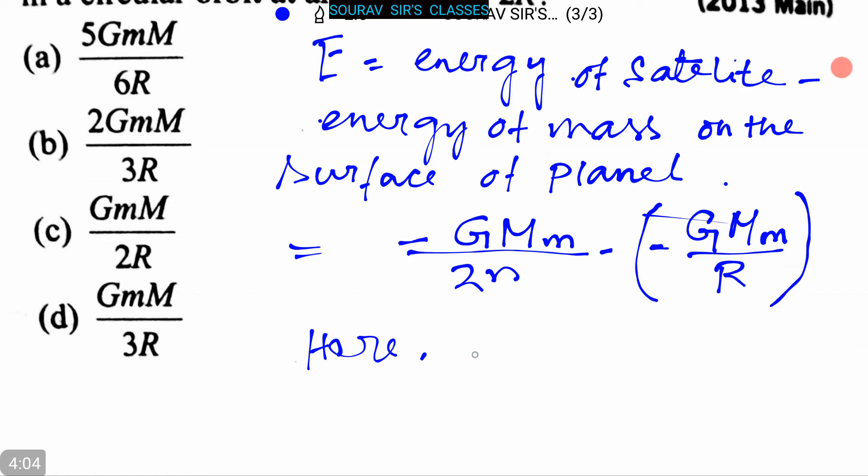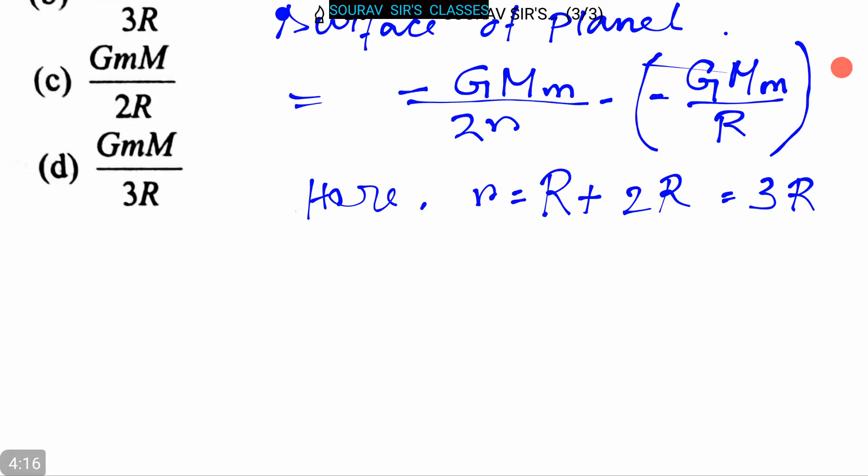Here r equals R plus 2R equals 3R. So substituting in the equation, we can get that E equals 5GMm divided by 6R.